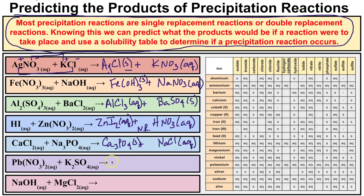Next we have lead(II) nitrate in solution with potassium sulfate. The two possible products are lead(II) sulfate, PbSO4, and potassium nitrate. Potassium nitrate is soluble in water. However, if we look at lead(II) and go over to sulfate, we see it does not dissolve in water. So lead(II) sulfate will be your precipitate and a chemical reaction will take place.